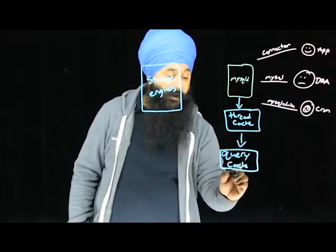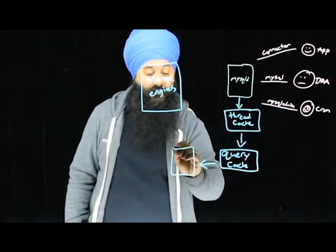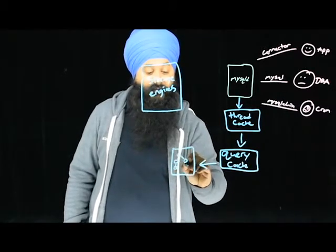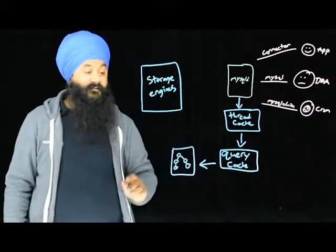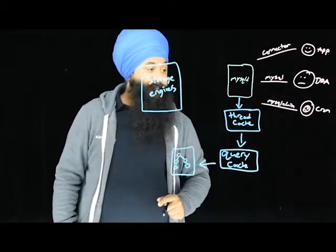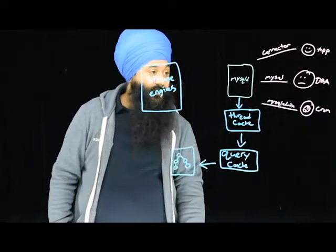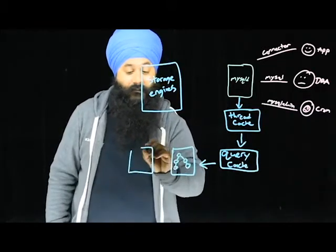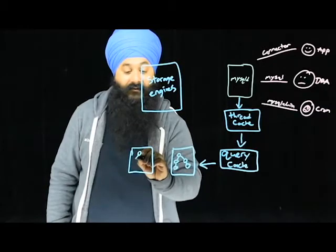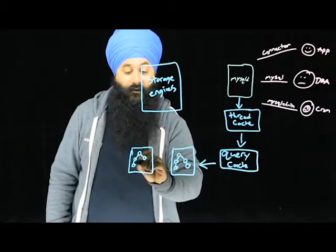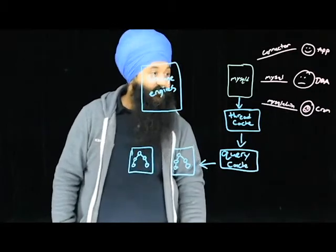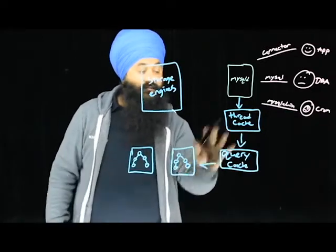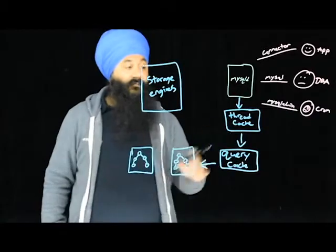From there, the query goes to the first level of the parser. What the parser does is create a parse tree — it tokenizes your query, validates the SQL, and makes sure the semantics make sense. The second part of the parser validates our objects, our table names, and our grants. So the first part takes the query — let's say you do SELECT x, y, z FROM table_one — and tokenizes it.